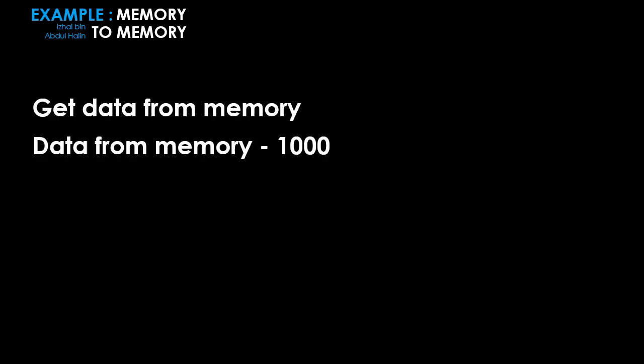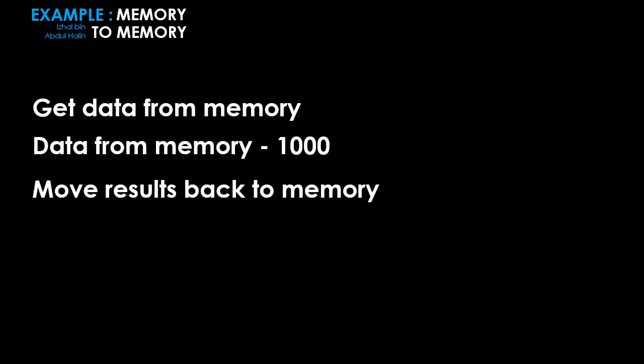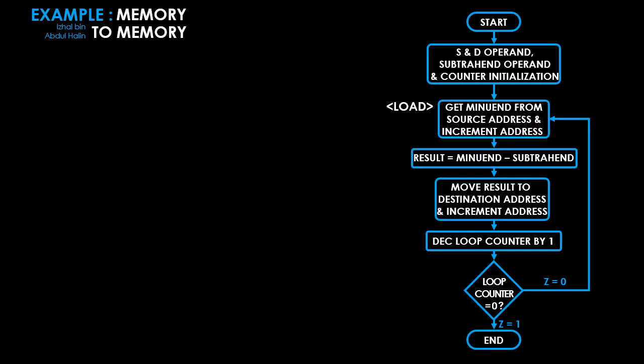This program is called 'memory to memory'. It's a simple program to study the Branch Not Equal instruction in a more realistic situation. Its purpose is to move data from memory into a register; 1000 is then subtracted from the data, and the result is moved back into a new memory location for storage. This process is repeated two times.